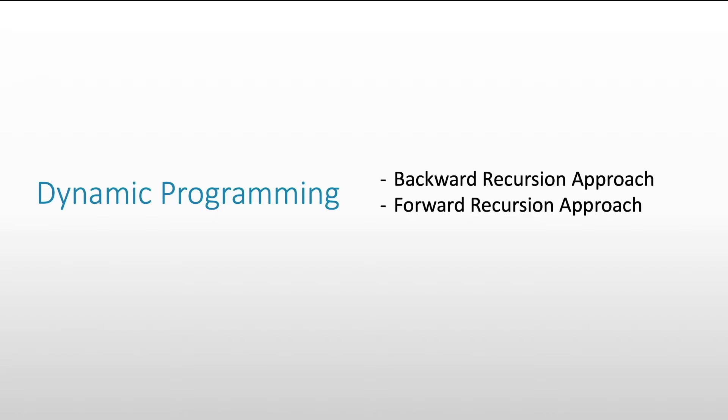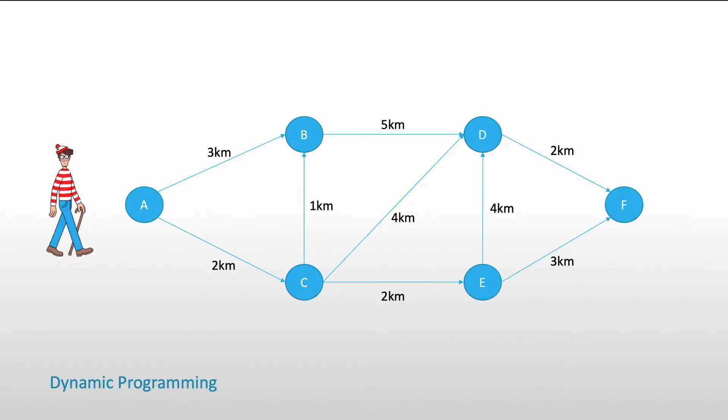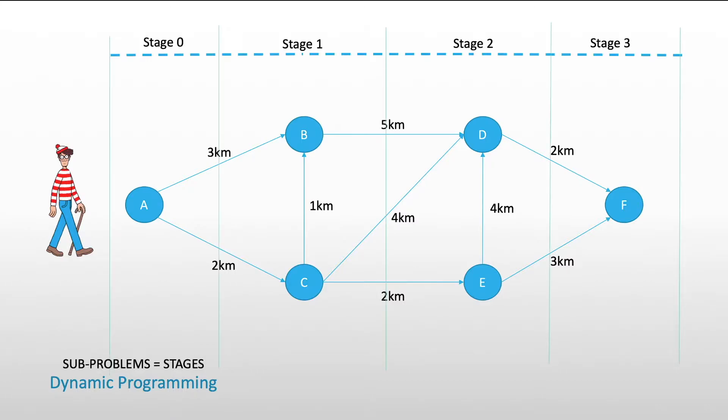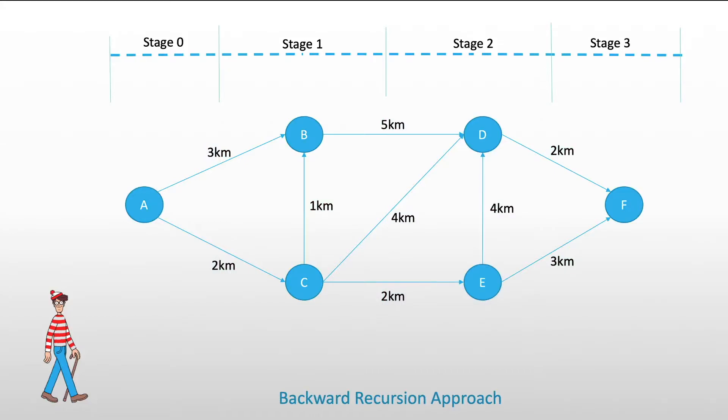Let's look at Waldo's problem again. In dynamic programming, what we do is we divide the entire master problem into different subproblems, or what we call stages. Here, we have four different stages for that. And what we want is to solve each of the subproblems, and as a whole, be able to solve the optimal value for the entire master problem. So, let's try the backward recursion approach.